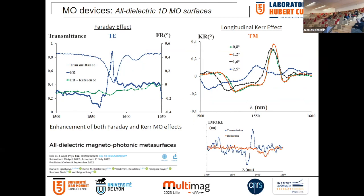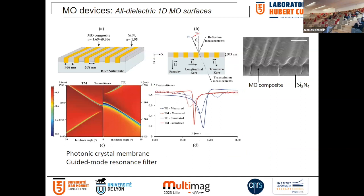Similarly, we observed enhancement for the longitudinal Kerr effect by varying the incidence angle, and also slight enhancements of the TMOKE. It was interesting to show that with this kind of photonic crystal membrane, every magneto-optical effect can be enhanced. This is useful for sensing applications where each effect is sensitive to a different direction or component of the magnetic field — some effects relate to polarization changes, others to intensity.